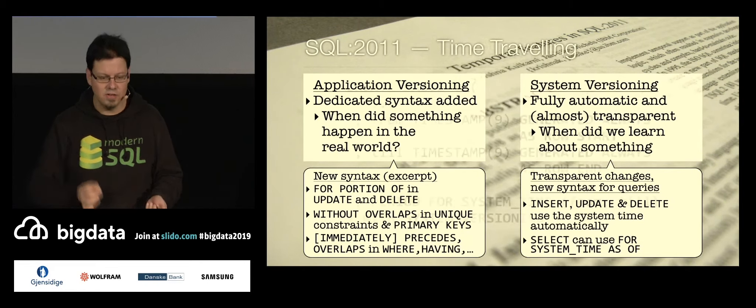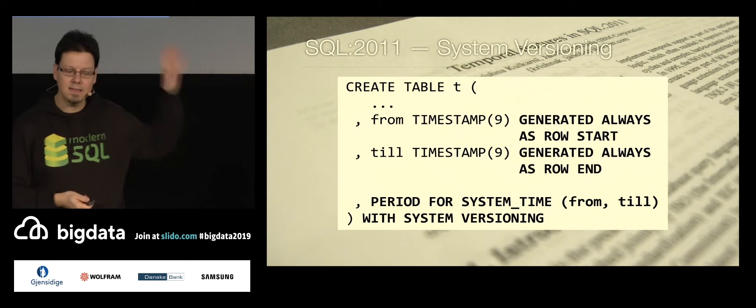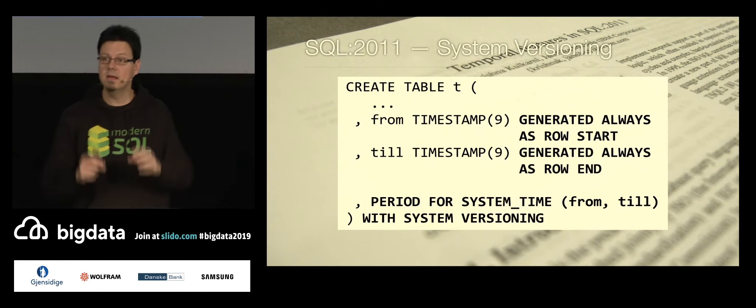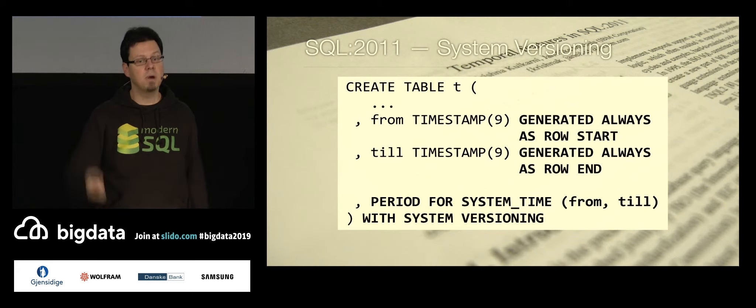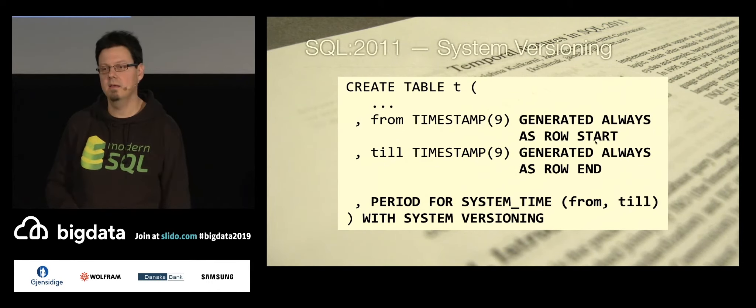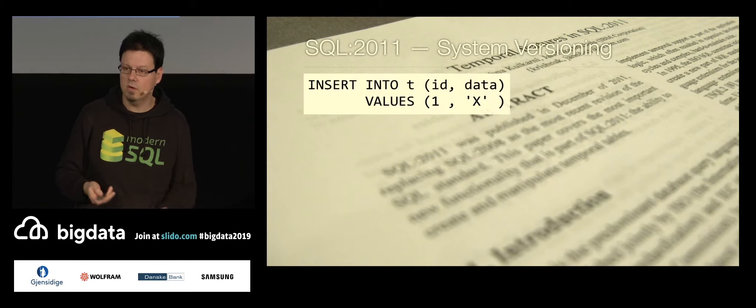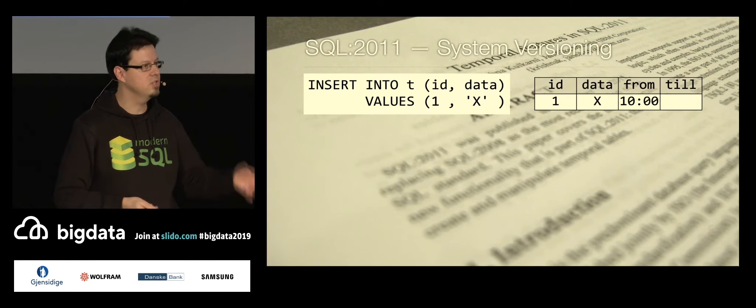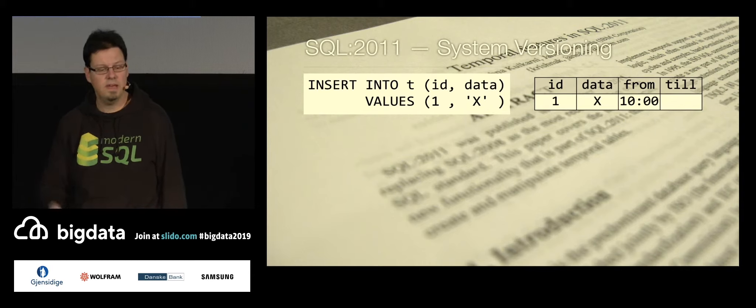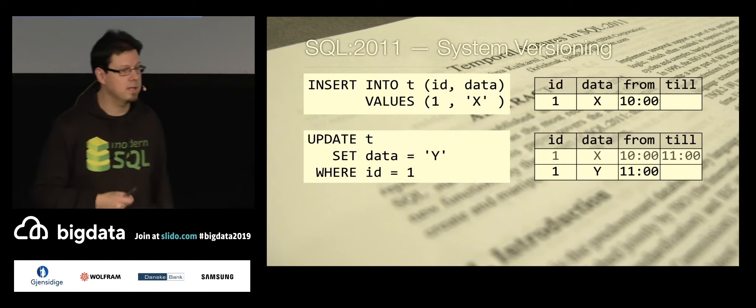I'll show you. So it's a table-by-table decision. You can decide on table level. I would like to have that system versioning on that table. And then you need to prepare that table a little bit. So you have this from and till timestamps, which basically says this row version is valid from here till there, but we delegate the maintenance of these columns to the database, generated always as row start and row end. And then we need a little bit more syntax sugar to make the magic work. And we use this table as though it was a normal table. We don't even care about these two columns. We just insert without mentioning these two columns. But still, the system takes care to set them correctly. So if I insert at 10 o'clock, then it will be recorded starting from 10 o'clock.